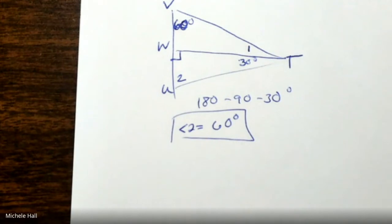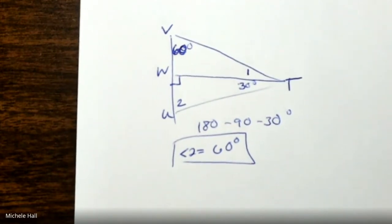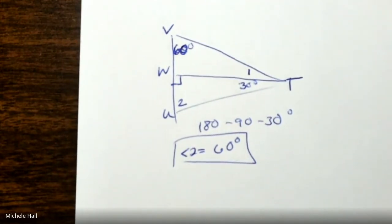Now how do I interpret the information to get into the second triangle? I have 60 degrees — that's it.